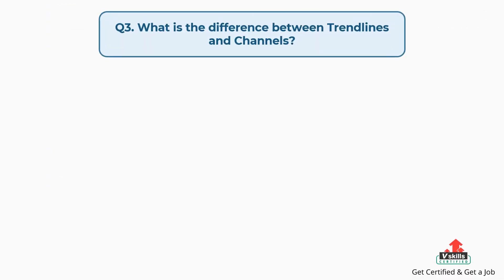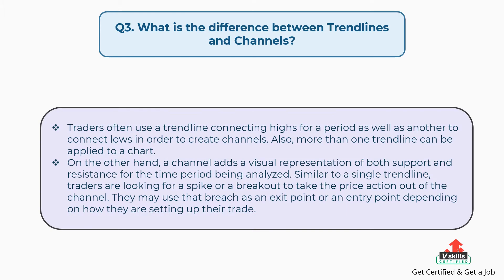Question number 3: What is the difference between trendlines and channels? Traders often use a trendline connecting highs for a period as well as another to connect lows in order to create channels. More than one trendline can be applied to a chart. On the other hand, a channel adds a visual representation of both support and resistance for the time period being analyzed. Similar to a single trendline, traders are looking for a spike or a breakout to take the price action out of the channel, and may use that breach as an exit point or an entry point depending on how they are setting up their trade.